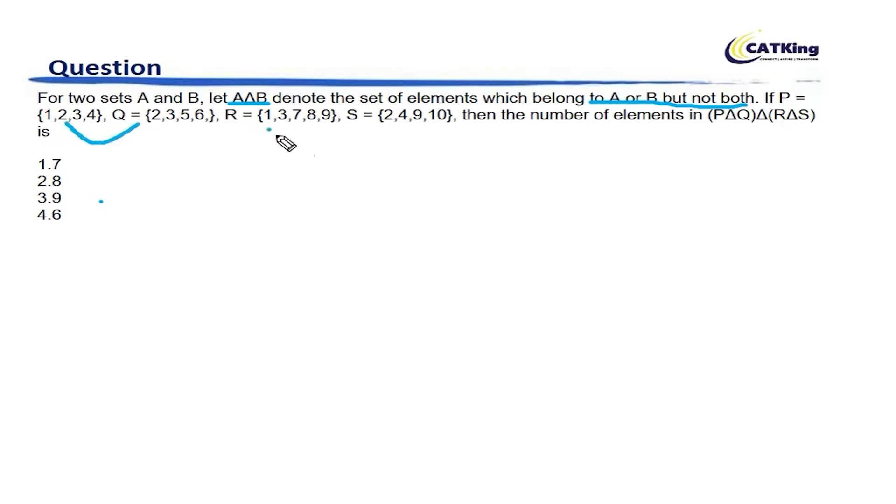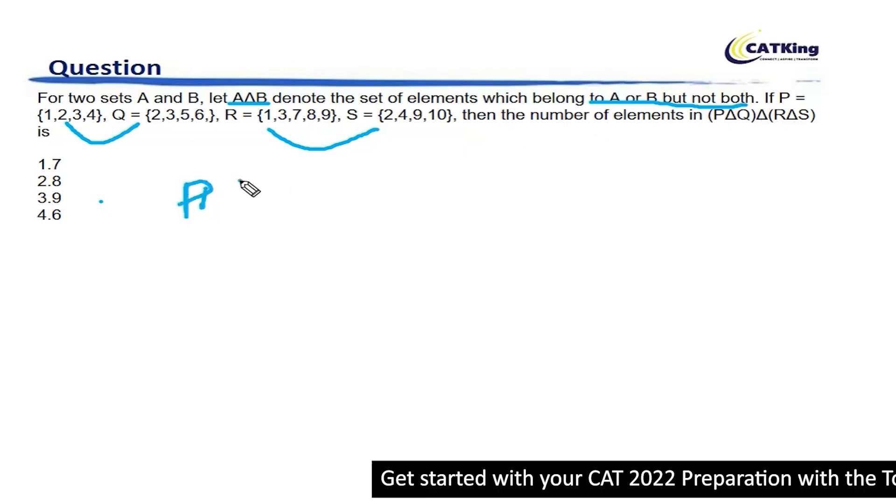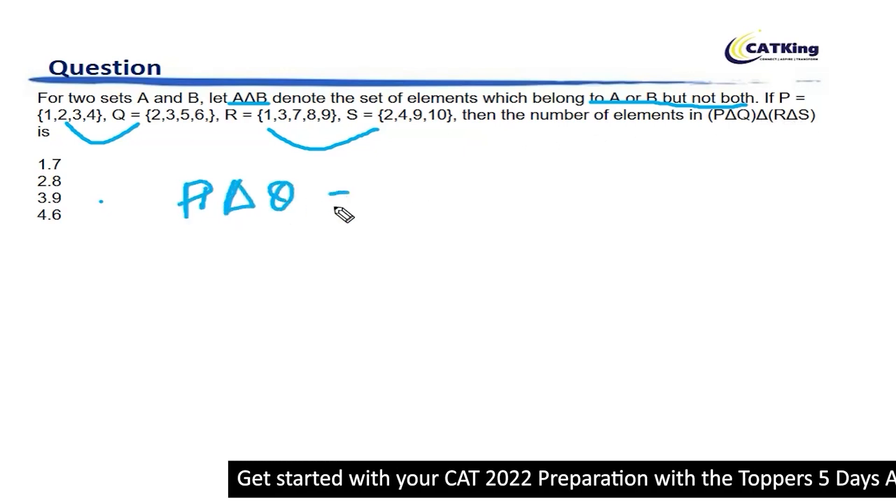So if P and Q are given, R and S are given, we need the number of elements in P delta Q delta R delta S. So P delta Q will be what?